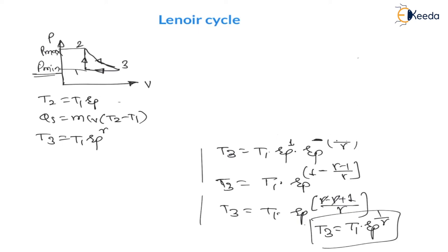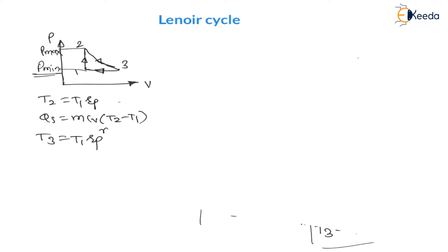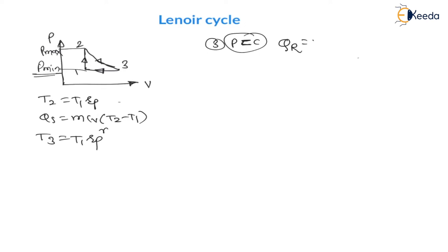The third process, 3 to 1, is constant pressure heat rejection. Since pressure is constant, we use specific heat at constant pressure Cp. Heat rejected equals mCp(T3 − T1).